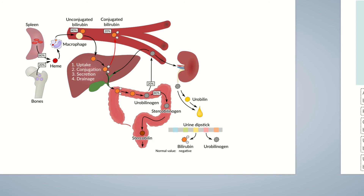Because bilirubin has a yellow-orange color, the urine in bilirubinuria is dark in color. Bilirubinuria only occurs in conditions associated with increased levels of conjugated bilirubin in the blood. Conditions leading to elevated levels of unconjugated bilirubin don't cause bilirubinuria.